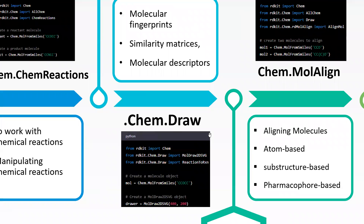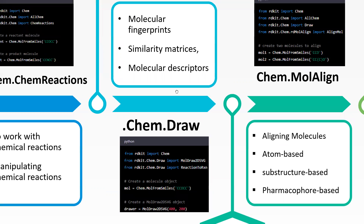Next is rdkit.Chem.Draw. To activate it, import from rdkit.Chem.Draw. This sub-library provides tools for drawing molecules and reactions. The key classes are MolDraw2D and the reaction drawing classes. It provides 2D representation of your molecules and the ability to save molecules in image formats.